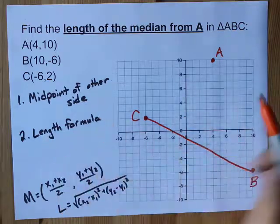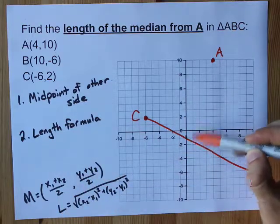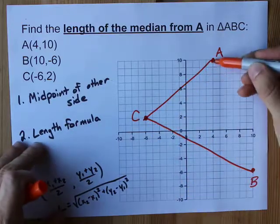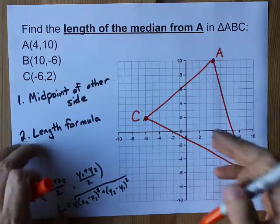And then we're going to use the length formula to find the length between that midpoint and point A. I'm just going to draw the triangle here to emphasize to you that it is a triangle.